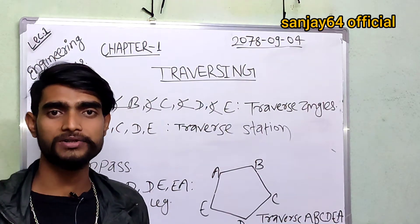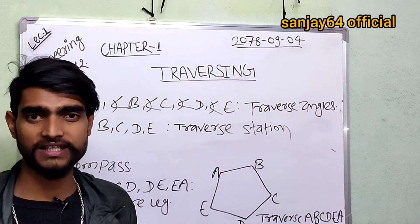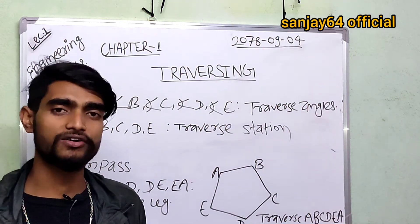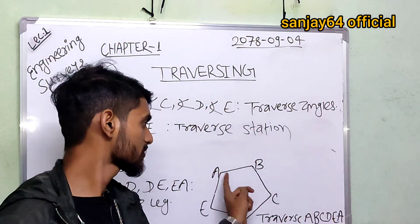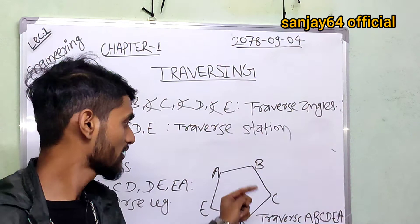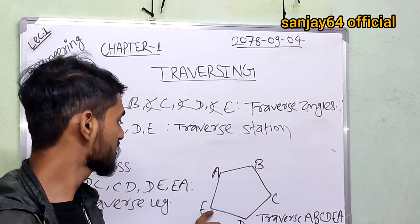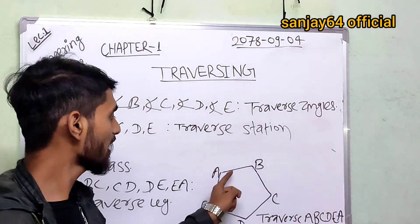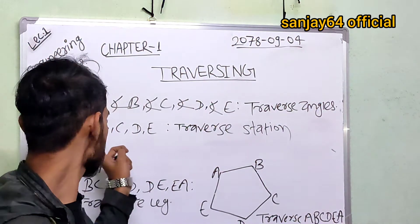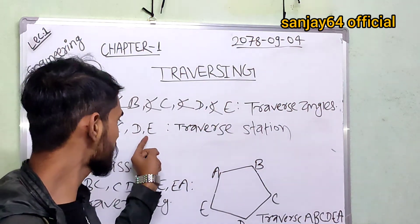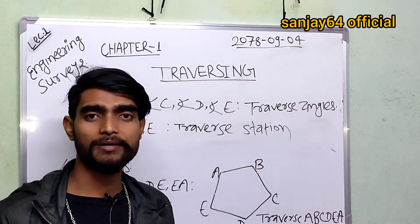Traverse Angle, Closed Traverse Angle. The difference between the two: in a closed traverse, the points are a, b, c, d, e, and back to a. The traverse stations are A, B, C, D, and E — these are the traverse stations.